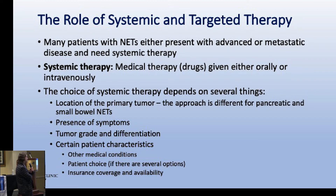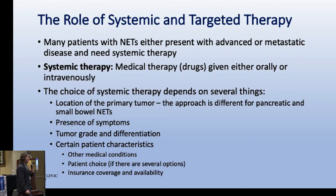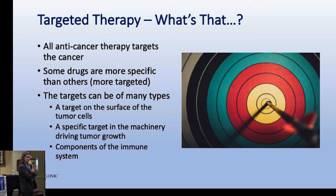The choice of systemic therapy depends on a lot of different things - the type of tumor, the location, where did it start? Pancreatic is treated differently than small bowel. The presence of symptoms matters too. Sometimes we go after tumor control, sometimes symptom control, sometimes both. And other medical conditions also factor in.